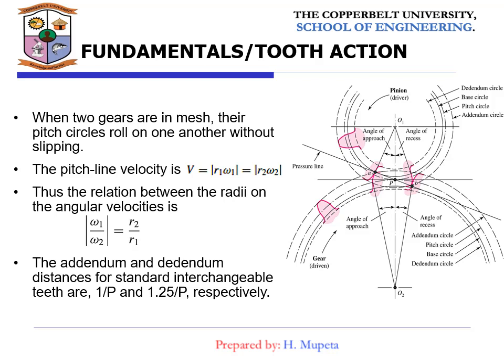Now we look at the fundamentals of tooth action. When two gears are in mesh, their pitch circles roll on one another without slipping, and the pitch line velocity will be given by the corresponding equation. There is a known relationship between the radius and the angular velocity from previous slides. The addendum and dedendum dimensions for standard interchangeability are 1 over P and 1.25 over P respectively — these must be remembered.